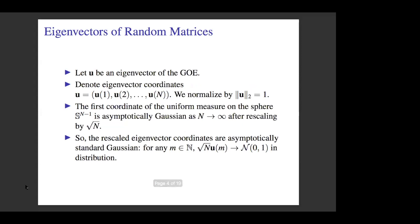Using this fact, we can do a computation and see what their distribution is. If we let u1 through uN denote the coordinates of a normalized eigenvector, by symmetry and a standard fact from probability, if you have a uniform measure on the sphere and take the first coordinate, this is asymptotically Gaussian as N goes to infinity after you rescale by root N. So for this specific model, we can compute very exactly what the distribution is.